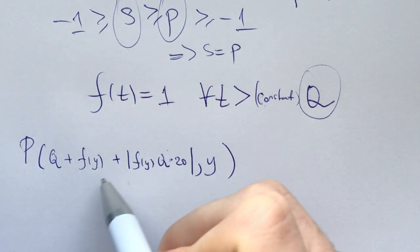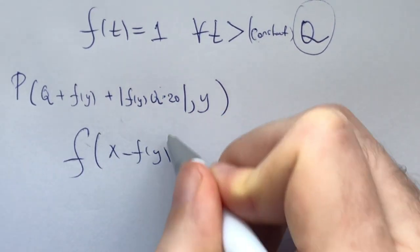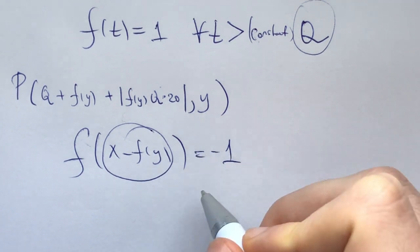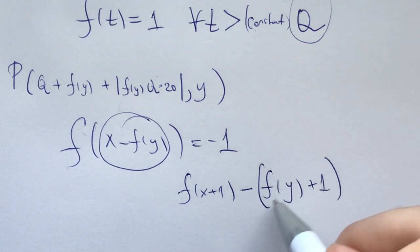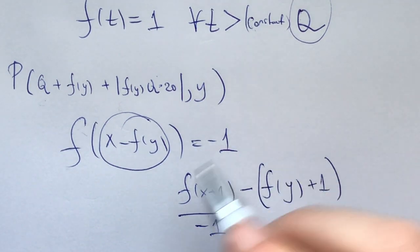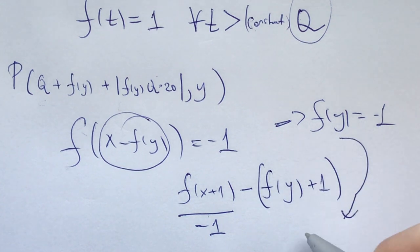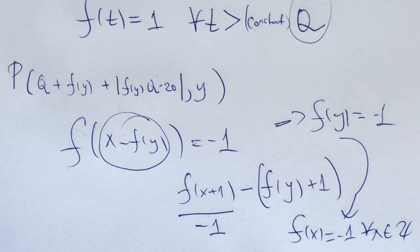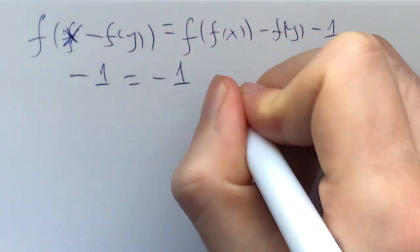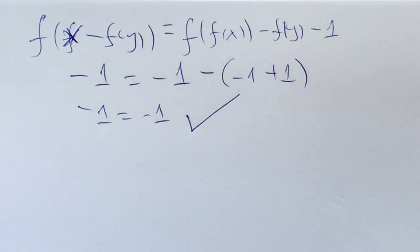Since s is the maximum and p is the minimum, and both are squeezed to negative 1, we get s equals p equals negative 1, meaning f of t equals negative 1 for all t greater than some constant q. Plugging in x equal to q plus f of y plus a large constant, the left-hand side becomes negative 1 and the right-hand side forces f of y to equal negative 1. Since y was arbitrary, f of x equals negative 1 for all integers x. Plugging into the original confirms this works: negative 1 equals negative 1 minus negative 1 plus 1, i.e., negative 1 equals negative 1.